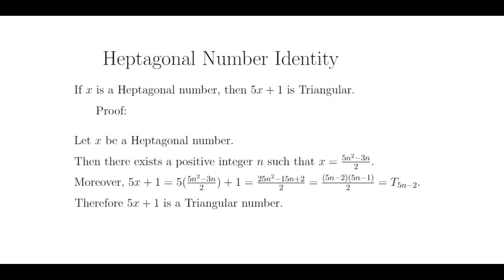But if you notice carefully, this has the form of something times something 1 greater divided by 2, which is a triangular form. Therefore, this is a triangular number, and specifically, it is T sub 5n minus 2. And that completes the proof.